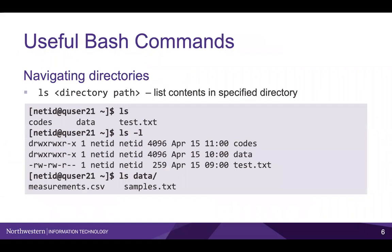Next, let's go over a handful of useful bash commands that can help get you started. We will go over some commands you can use to navigate directories. ls followed by a directory path will list the files and any subdirectories in the specified directory, or in your current directory if you don't specify a path. Adding the -l flag will display additional information about the listed files and directories. In this example on the slide, you can see that there are two directories named codes and data, and a text file named test.txt. The way that we can tell that codes and data are directories is that the sequence of characters in the first column starts with a d.